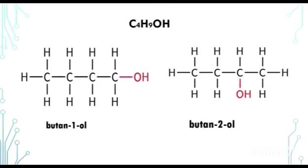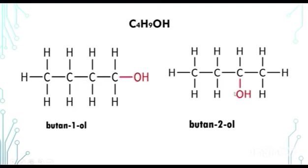One more example — we have butan-1-ol. There are 4 carbon atoms on each side, 9 hydrogen atoms on each side (not including the OH), and both have the OH hydroxyl group. What's different is the position of the hydroxyl group — this OH is on carbon number 1, but this OH is on carbon number 2. And that's it for your positional isomers.